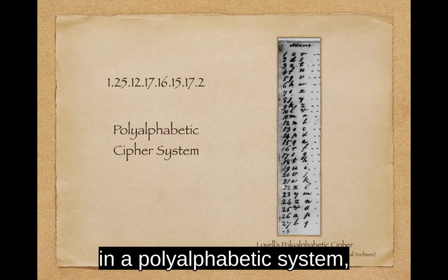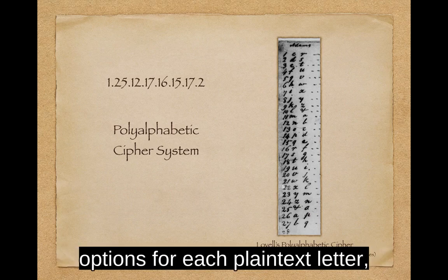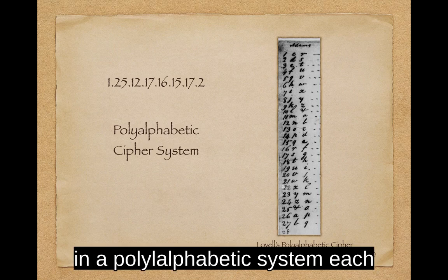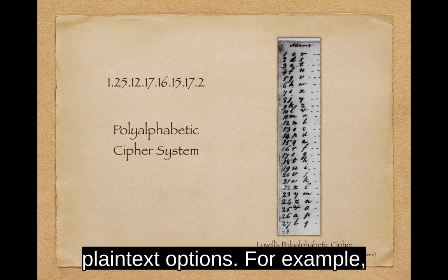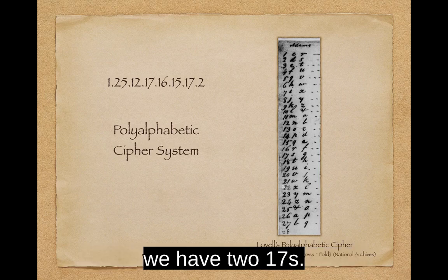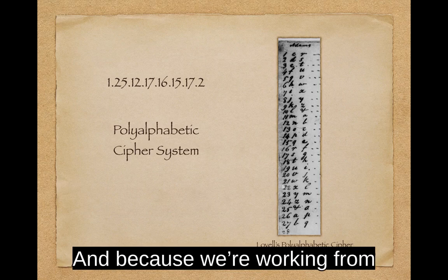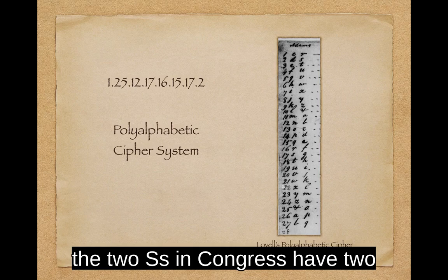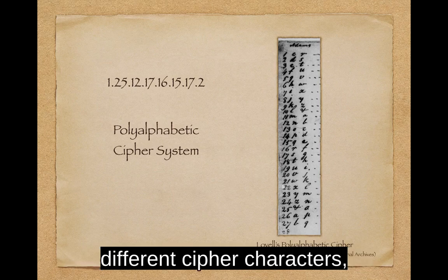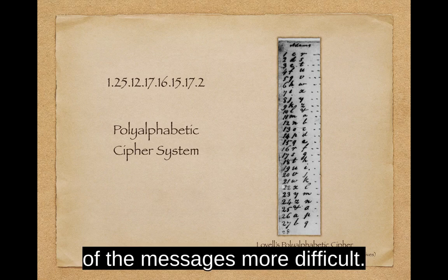In a polyalphabetic system, it's similar to Dumas' homophonic system, but where Dumas had several options for each plaintext letter, in a polyalphabetic system each cipher character has multiple plaintext options. For example, we have two 17s — they decipher to both G and S. And because we're working with multiple plaintext alphabets, the two S's in Congress have two different cipher characters: 17 and 2. This would make cryptanalysis of the messages more difficult.